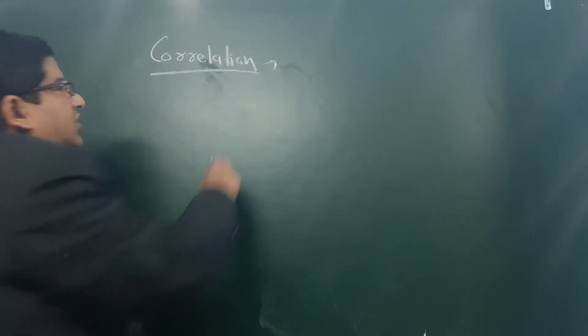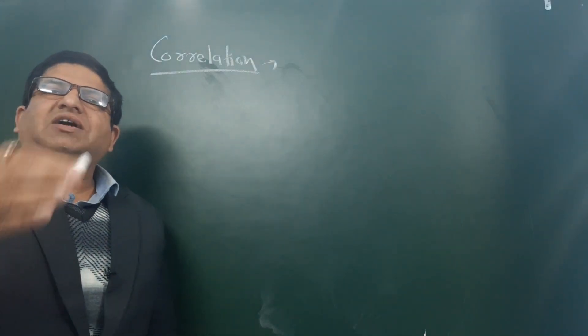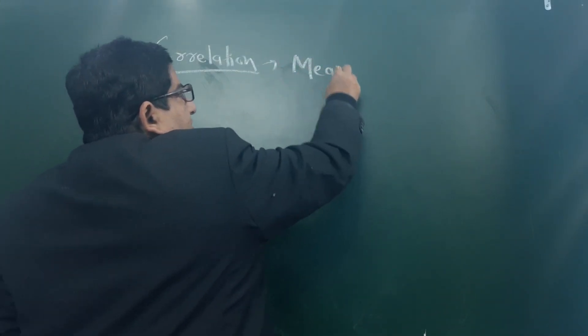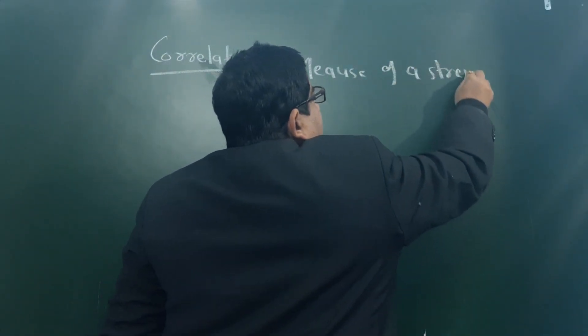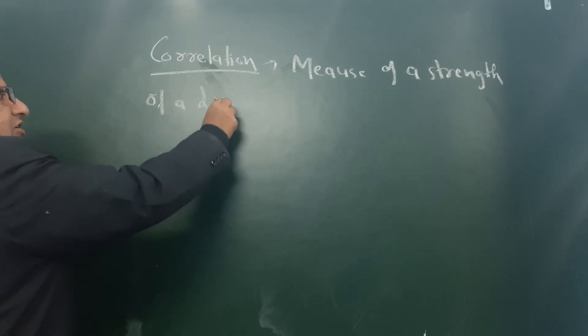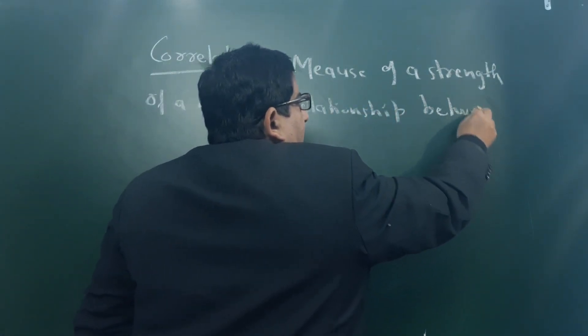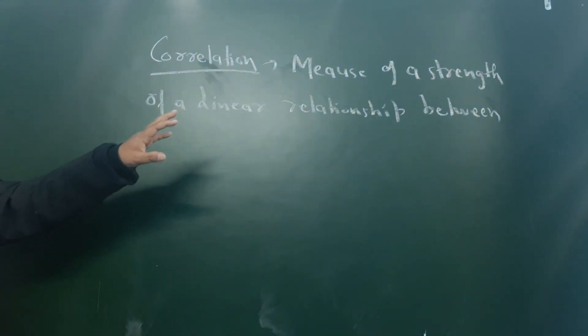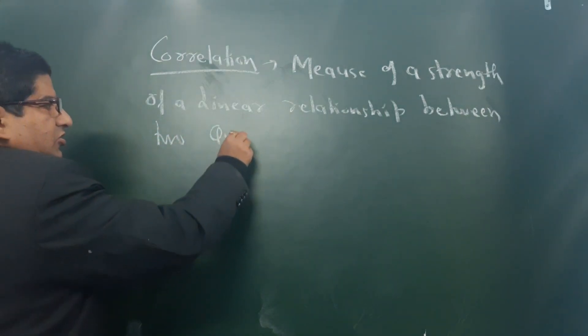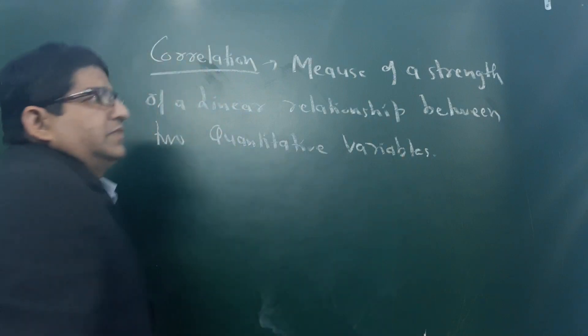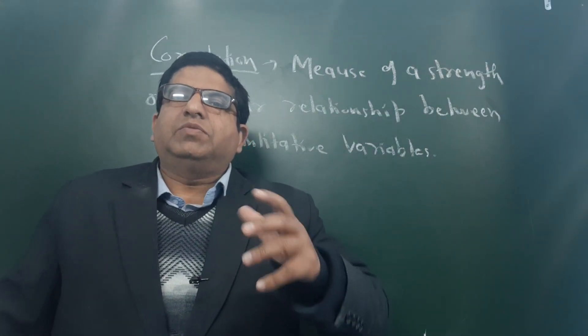The chapter name is Correlation. How can we define it? Correlation tells the measure of the strength of a linear relationship between two quantitative variables. In simple words, it tells the relation between variables — that relation is known as correlation.